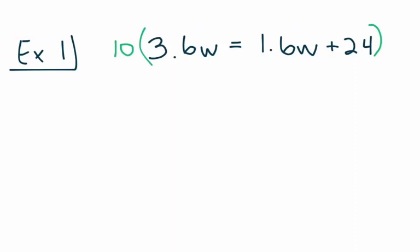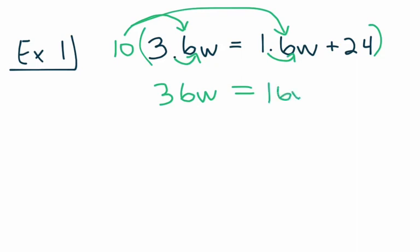So I'm going to show my distribution of the ten into the entire equation. I'm going to start with ten multiplied by 3.6w, and we should know from our unit in scientific notation that when we multiply by a power of ten, we're just going to move our decimal place one place value to the right, making the number bigger. So we have 36w is equal to, now I move on to my next term, 1.6w. Again, I move my decimal place one unit to the right, giving me 16w. And finally, my last term, ten times 24. There is no decimal place to move here, but ten times 24 gives us plus 240. And now this is a problem that you can solve on your own, but it's a pretty easy one, so we'll go ahead and solve it together.